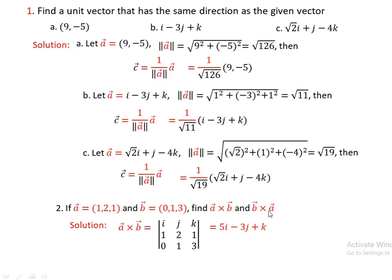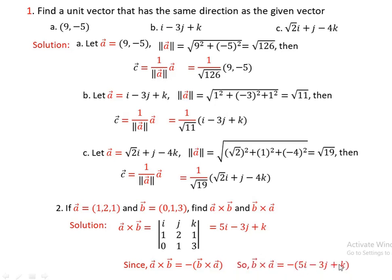Next, find b × a. From the properties of the cross product, a × b equals the negative of b × a. Using that property, b × a equals minus of a × b, which is minus of (5i - 3j + k).